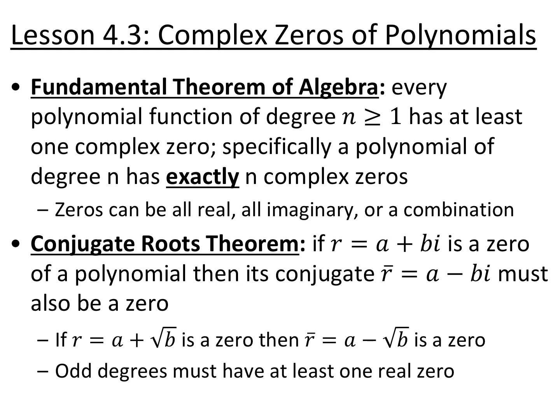The conjugate roots theorem says if you have r equals a plus bi as a zero of a polynomial, then its conjugate r-bar, which would be a minus bi, must also be a zero. They always have to come in complex conjugate pairs. Similarly with irrational numbers, if a plus root b is a zero, then a minus root b also has to be a zero. Odd degree polynomials have to have at least one real zero because they end in opposite directions — they have to cross the x-axis at least once.